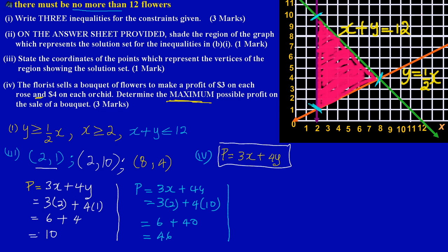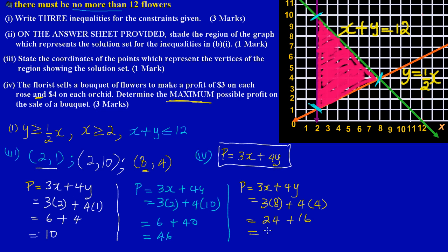Using the third coordinate (8, 4): P = 3(8) + 4(4) = 24 + 16 = 40. So the profit at the third vertex is forty dollars. Comparing all three results — ten, forty-six, and forty — the highest value is forty-six.